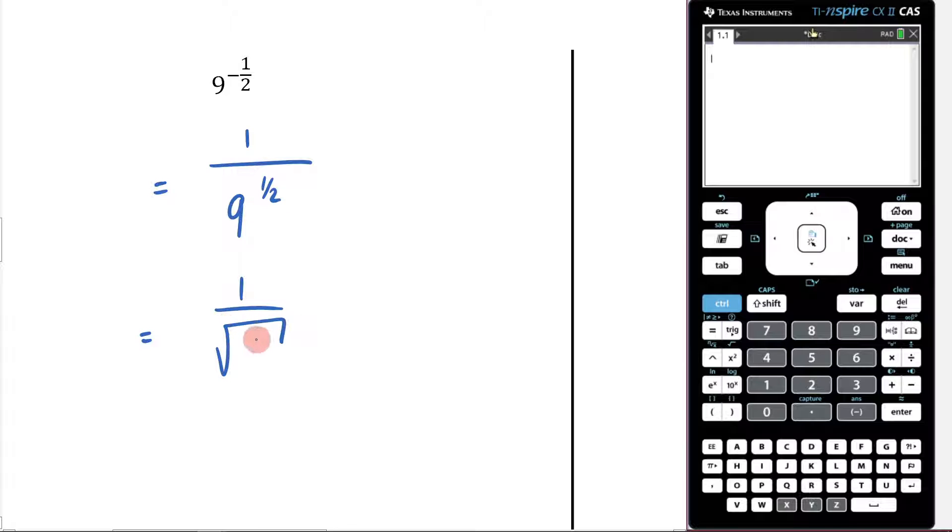I know that this is the same thing as 1 on the square root of 9, and I know that that's equal to 1 on 3. So that's how you would approach that question there. Let's highlight it, and let's go on to the next one.